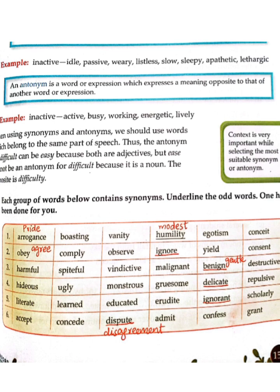For the fifth group: literary, learned, scholarly, educated, erudite — these all relate to being knowledgeable. But one word is different from the others, so we identify and underline it.